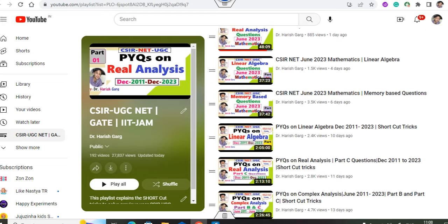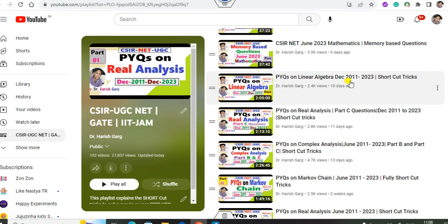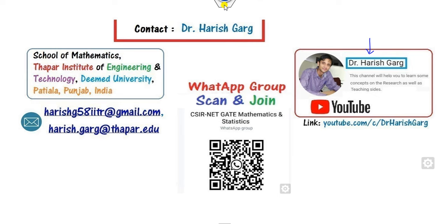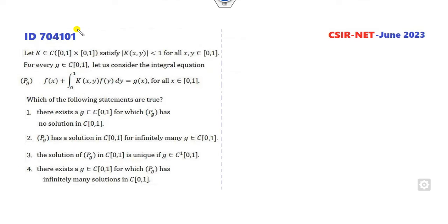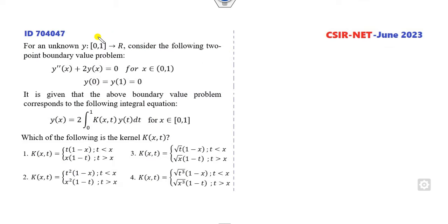We have already discussed various PYQ questions from the year 2011 to 2023 across all different topics. Today we will start with the integral equation. There are three questions asked on integral equations: one with ID 4.75, ID 100; another with ID 4.1, question 101 at 4.75; and one related to ID number 047, which is of three marks.